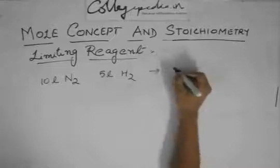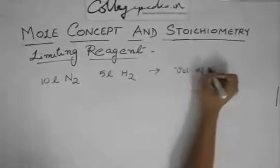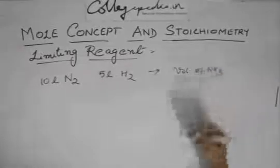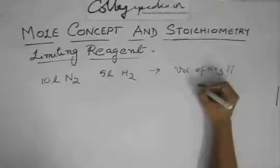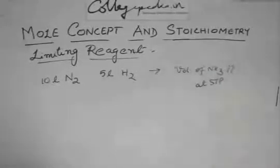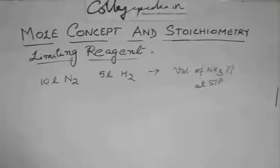10 liter of nitrogen reacts with 5 liter of hydrogen. What is the volume of NH3 formed at STP? Here, you see everything is given in volume.